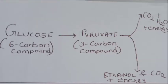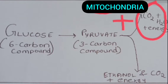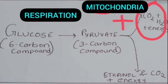Pyruvate can be further broken down in two ways. When broken down in the presence of oxygen, the products are carbon dioxide, water, and energy. This happens in the mitochondria. The food we eat contains glucose; when we respire, we take in oxygen, and in the presence of oxygen, glucose is finally broken down into carbon dioxide, water, and energy.